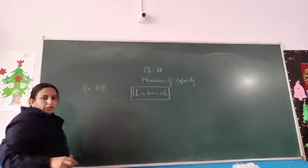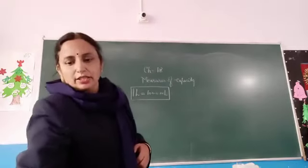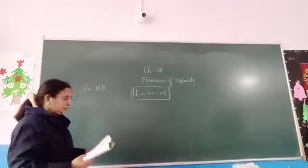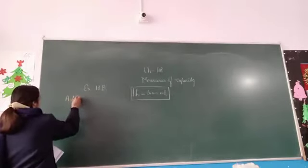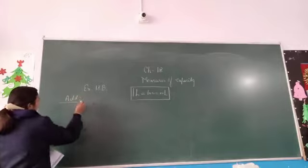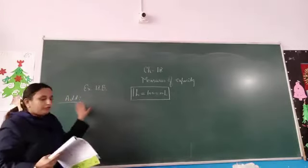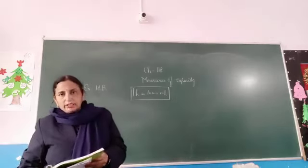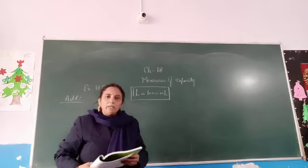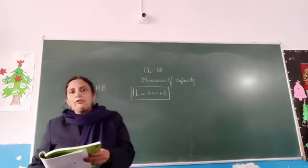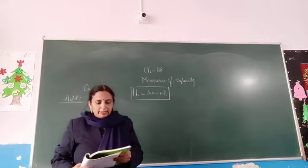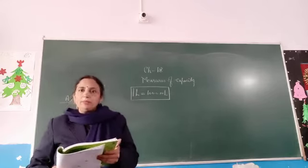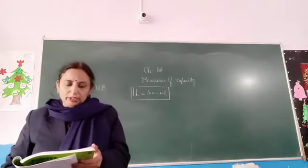Here there are two types of sums: addition and subtraction. First of all, I am going to add the numbers. In exercise 18B, the first part is addition. Here we have to add the numbers simply. You know the method of adding, but the difference here is only the arranging of units. Where there are units, you have to arrange the units, and then follow the simple method to add the numbers.